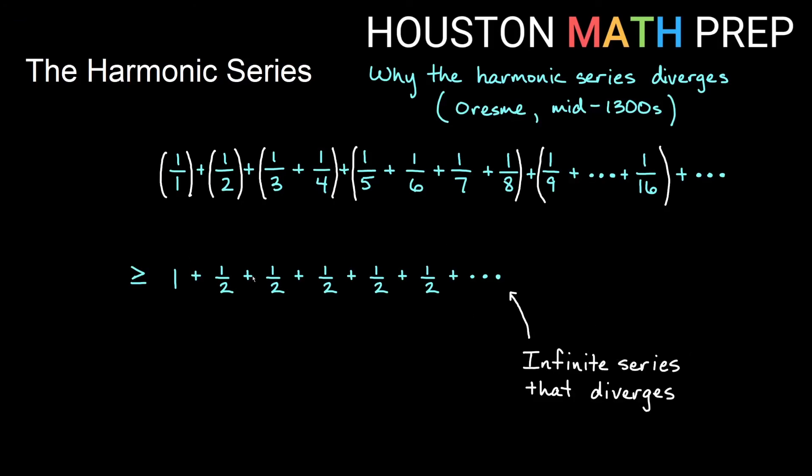Now if my second series diverges, and I know the list of sums for this one is at least as much as this one, then this one also has to diverge because this adds up to some infinite value if we take all of the terms forever. So this one's at least as much as that. It must also add up to some infinite value.